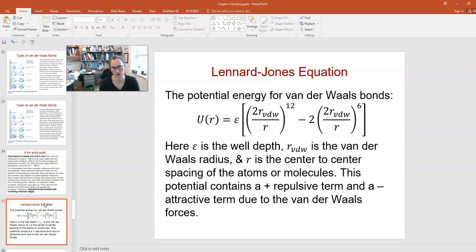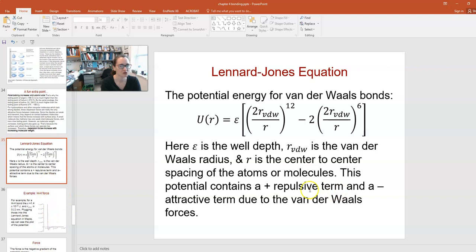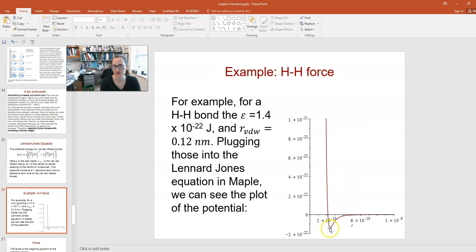The separation distance R is equal to epsilon times 2 times R_VDW, the van der Waals radius, over R to the 12th power minus 2 times 2 times the van der Waals radius over R to the 6th power. This is a potential energy equation with both a positive term and a negative term. In energies, if you have a positive energy, that's a repulsive term. If you have a negative energy, that means it's bound or an attractive term due to van der Waals forces.